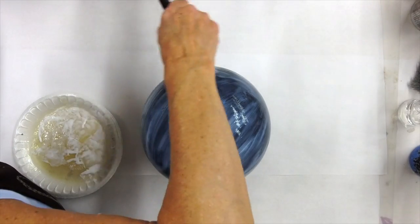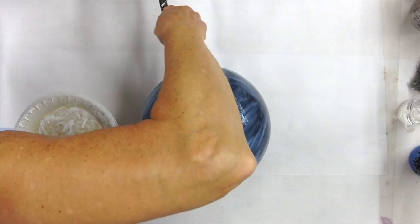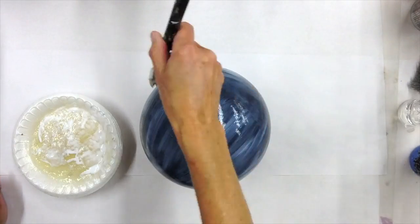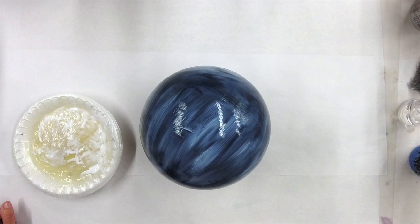And again, just double check with anything like this. Make sure you spin it around. Make sure you see all the sides and that you haven't missed anywhere. We'll let this dry and we'll be back for some magic.